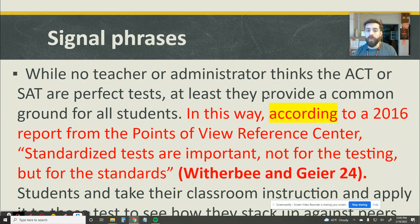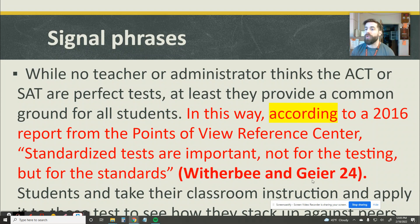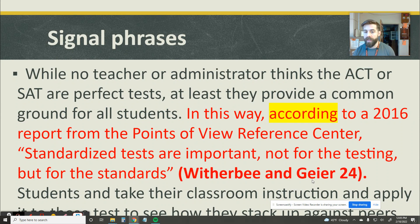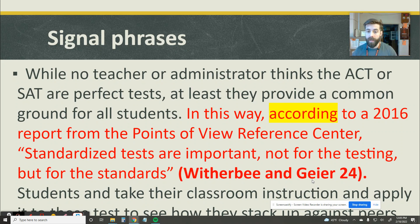In addition to making sure we have the correct citations, we're also going to want to make sure that we're introducing source information correctly, and we're going to be doing this with signal phrases. A signal phrase is just a way to tell your reader that the information you're about to give them is coming from somewhere else — it's not from you.